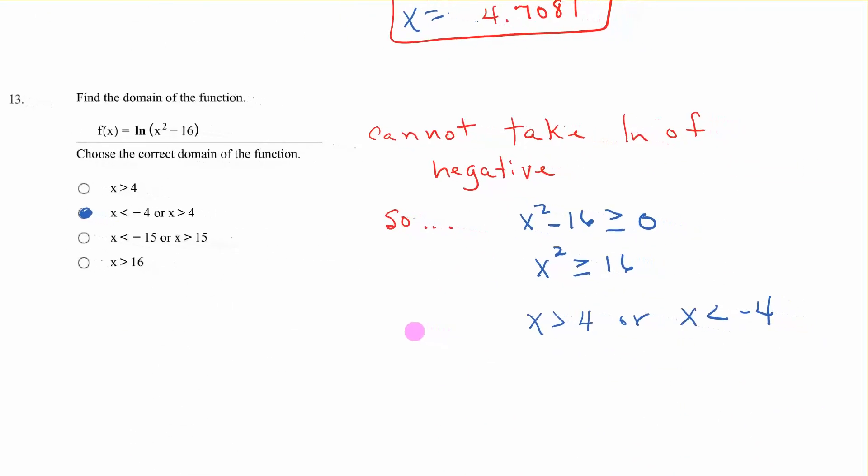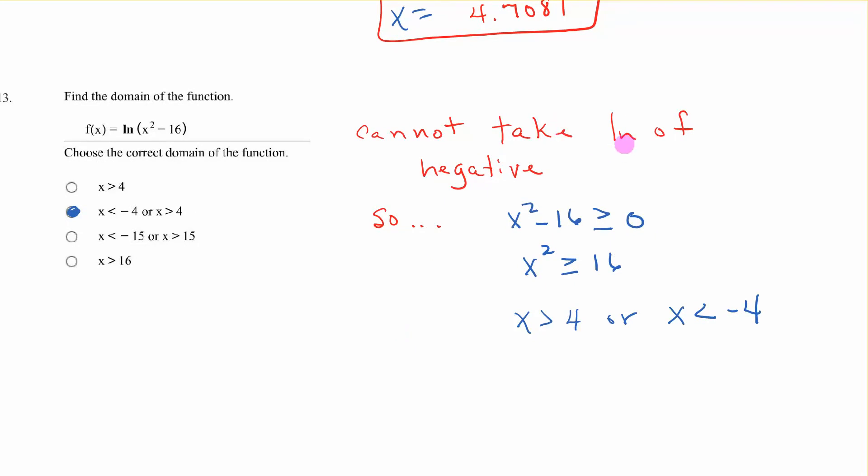Find the domain of this one. Since you cannot take the natural log of a negative, then this thing has to be greater than 0. It can't be equal to 0 either. So we have x squared minus 16 has to be greater than 0. So x squared has to be greater than 16. x has to be greater than 4 or less than negative 4. So that's what happens there. So we have that answer in 13.